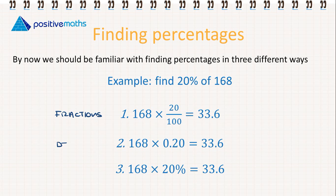We can also find the percentage using decimals. We're multiplying it by 0.20 or just using the percentage itself. We multiply it by 20%.